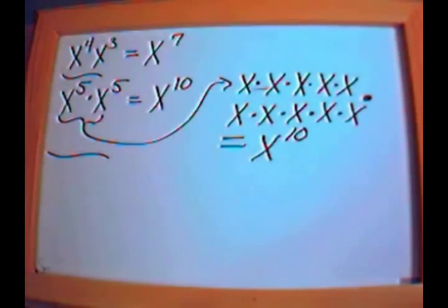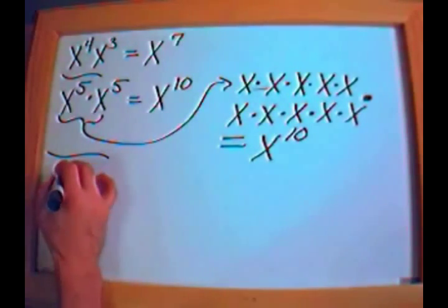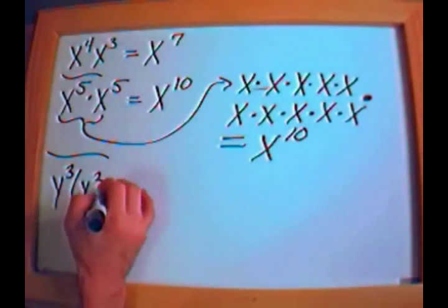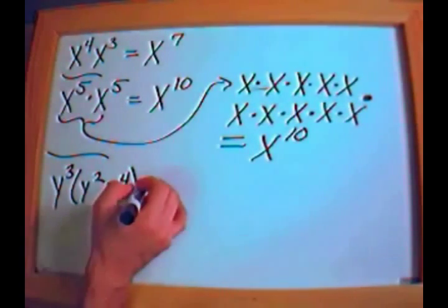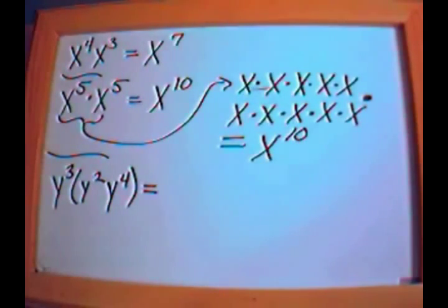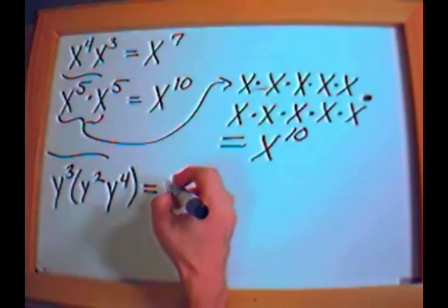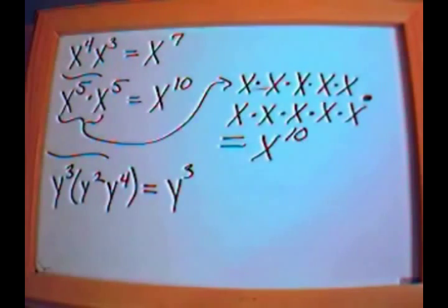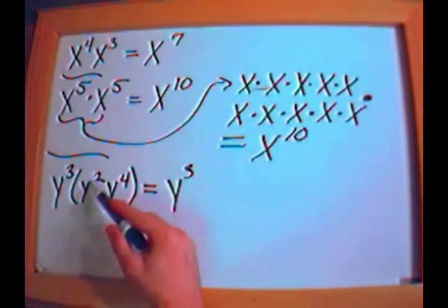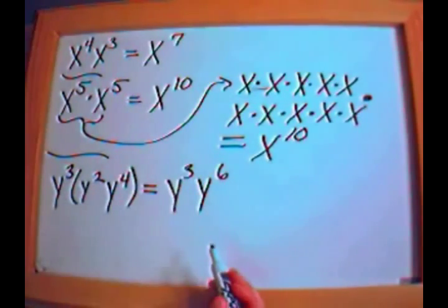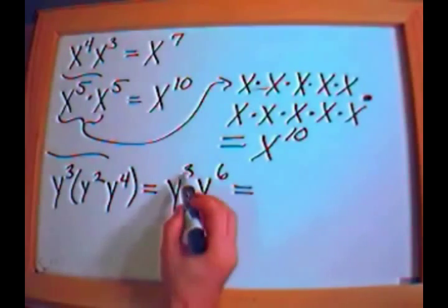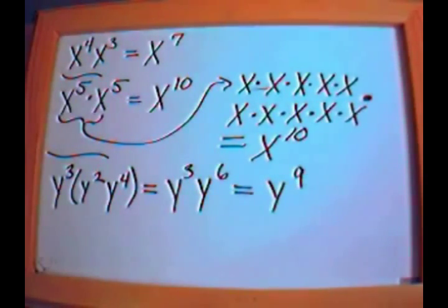What if we have something a little more interesting, like y to the third times, in parentheses, y squared times y to the fourth? We work inside the parentheses first. Carry the y to the third over, then simplify y squared times y to the fourth: same base, so 2 plus 4 equals 6, giving y to the sixth. Now y to the third times y to the sixth: same base again, 3 plus 6 equals 9. The answer is y to the ninth.